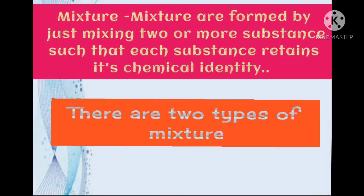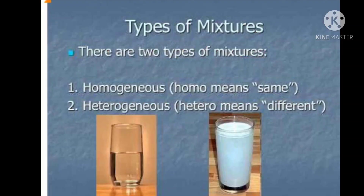Mixture. It is formed by just mixing two or more substances such that each substance retains its chemical identity. There are two types of mixture: Homogeneous and Heterogeneous. Homo means same and hetero means different.